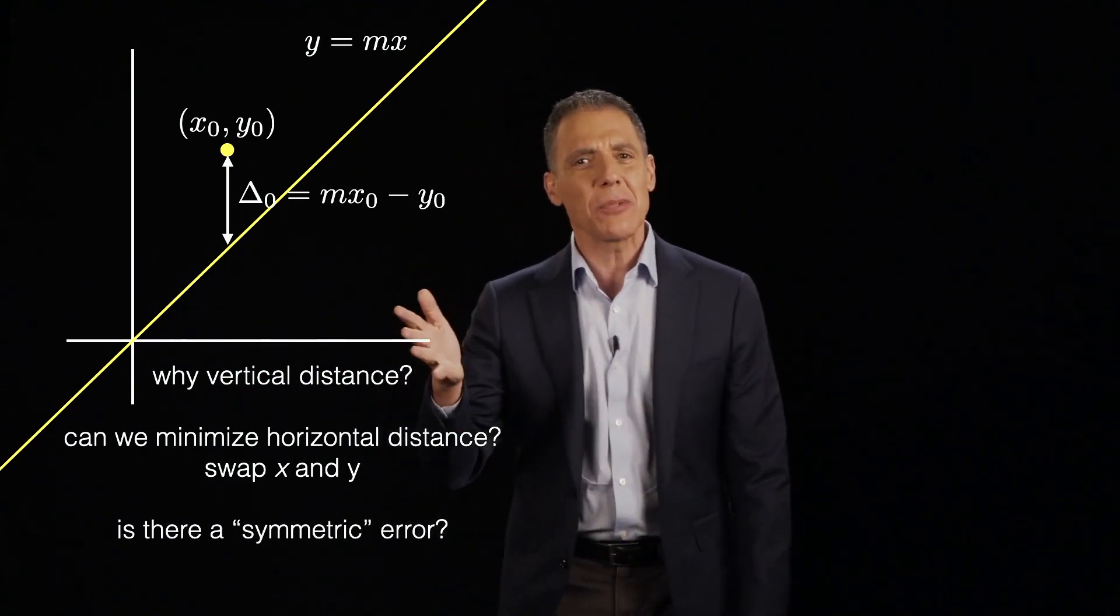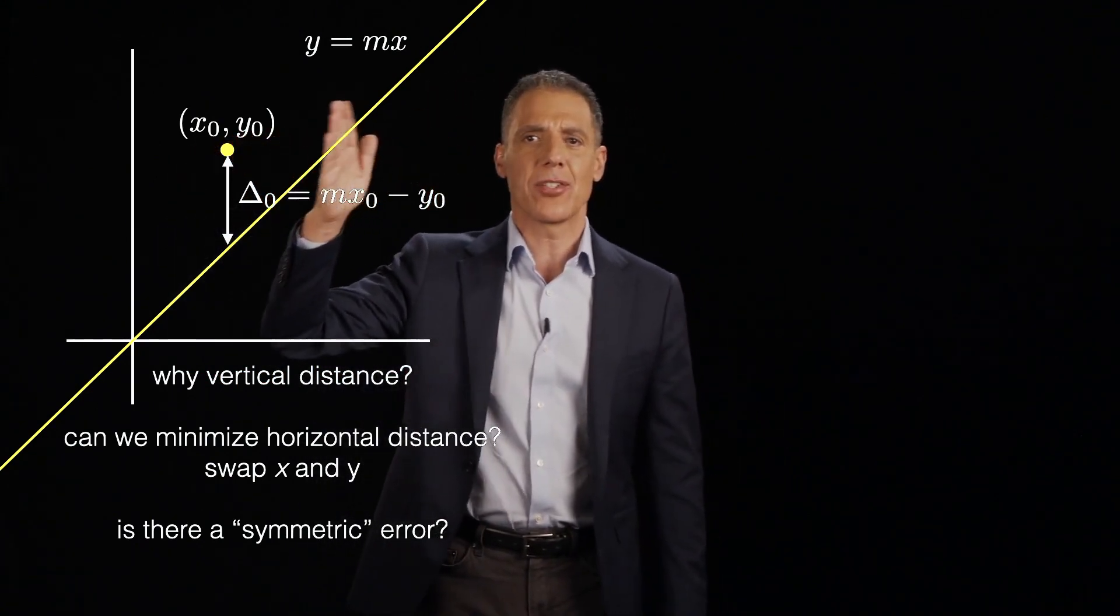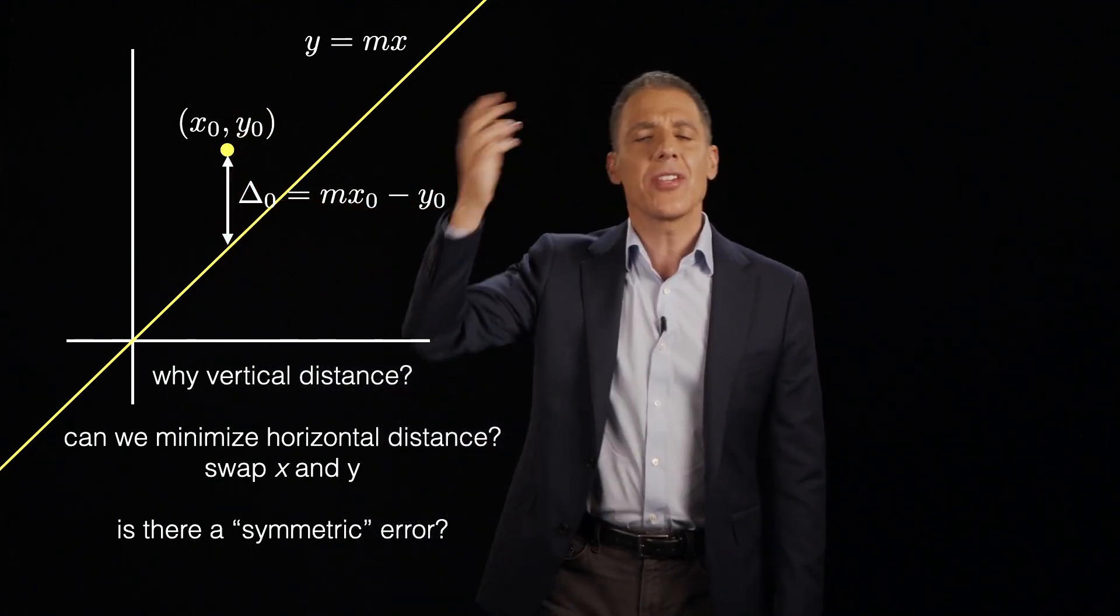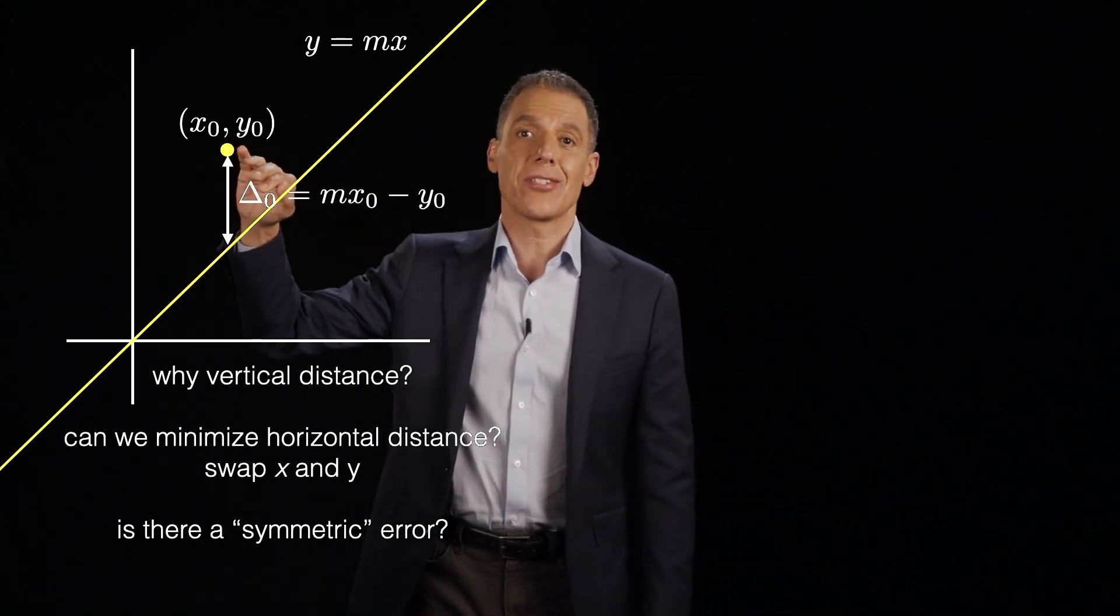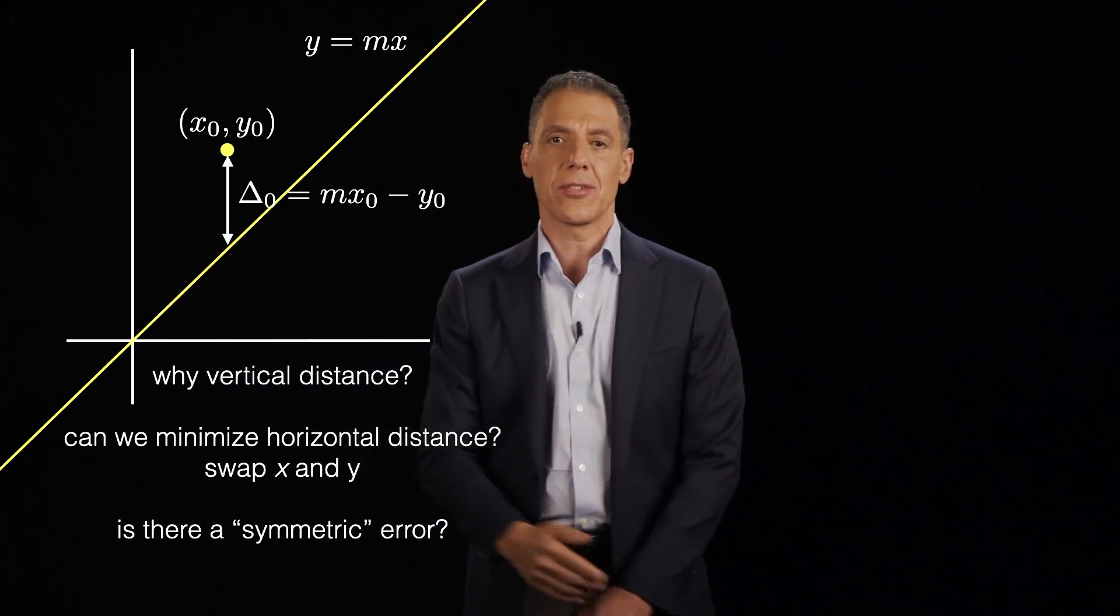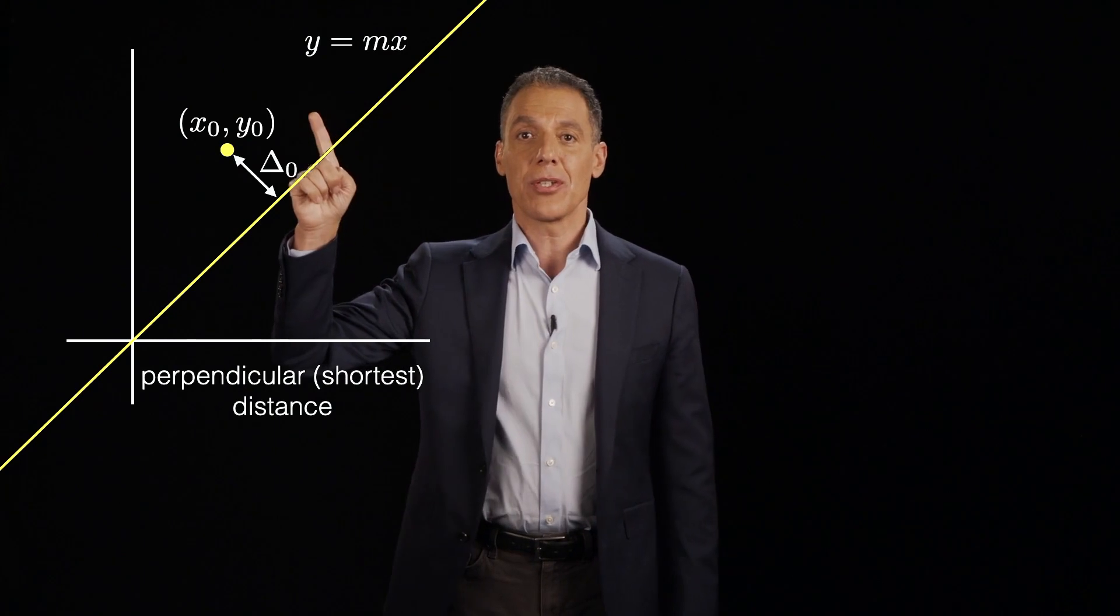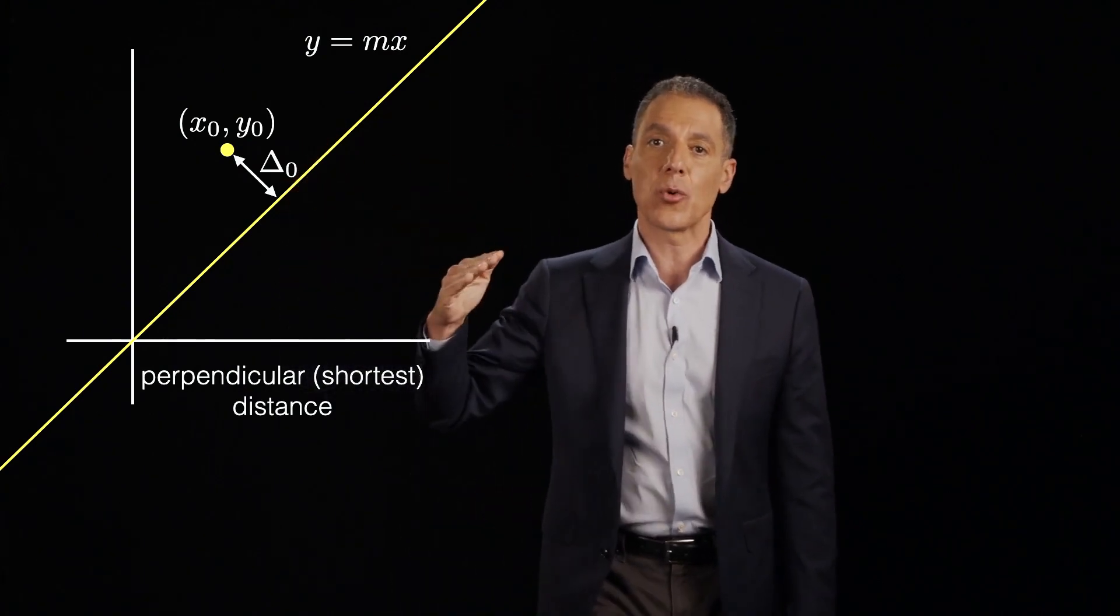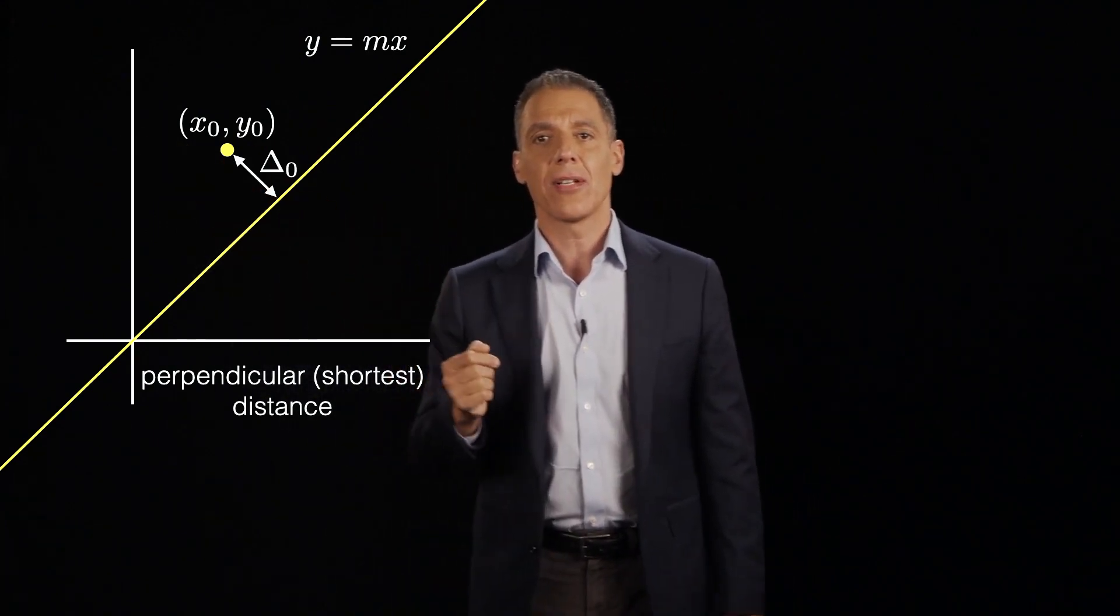But that's still asymmetric. I'm still saying that all the errors are in one dimension, not in the other. Is there, for example, a symmetric error that just says what is the distance to the line? Forget about horizontal distance or vertical distance. And, of course, I mean, conceptually, the answer is, of course, there is. I can compute this distance right here. So, let's let Δᵢ be the shortest distance between the point and the line.